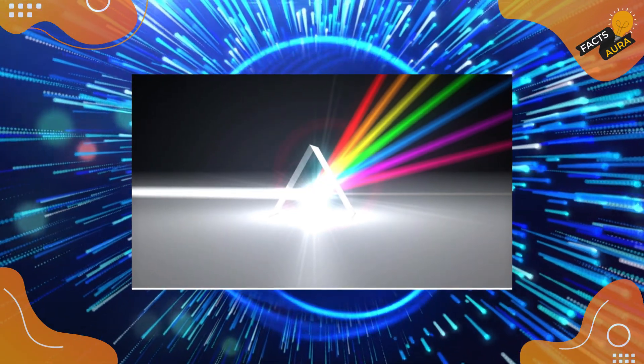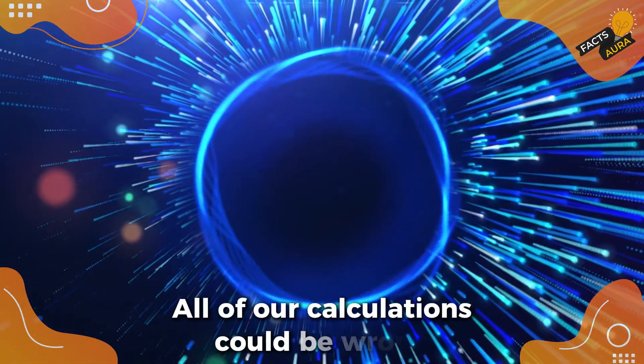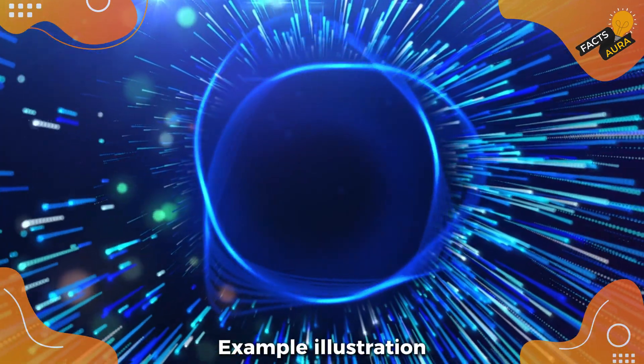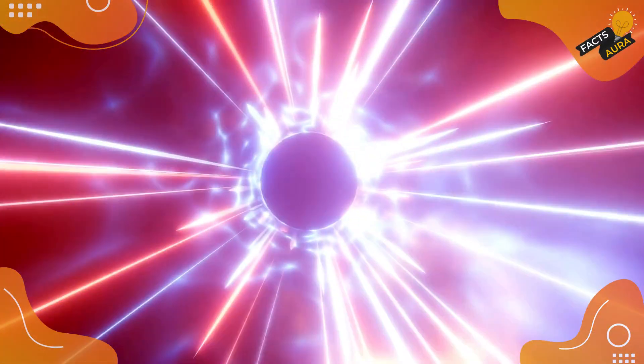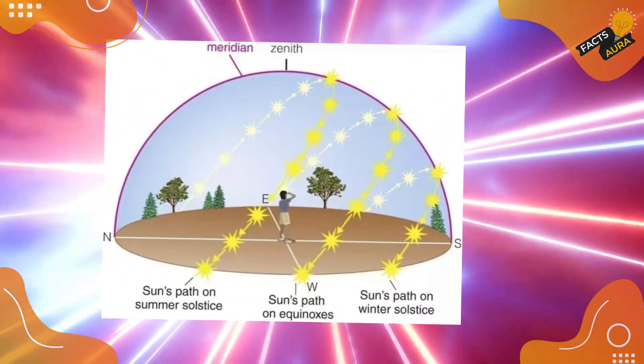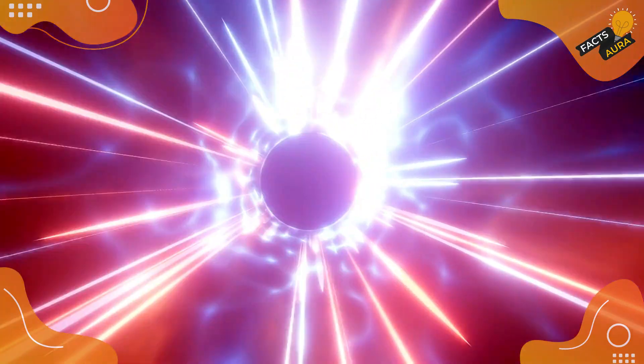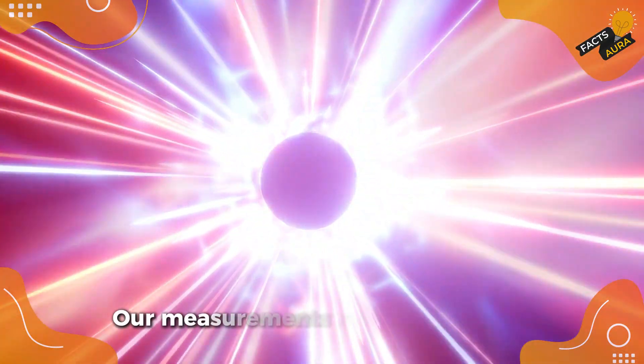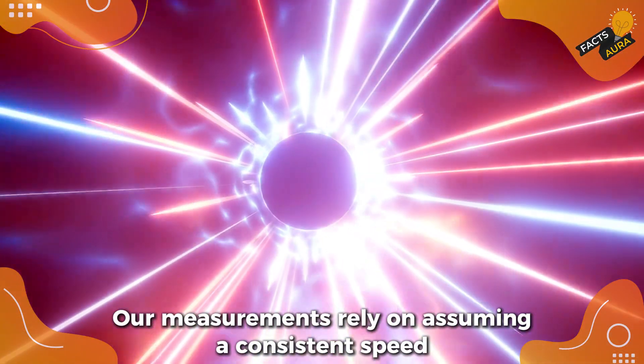If light did travel differently in one direction, all of our calculations could be wrong. Imagine a world where light travels faster when moving west than east. We wouldn't know, because all our measurements rely on assuming a consistent speed in all directions.